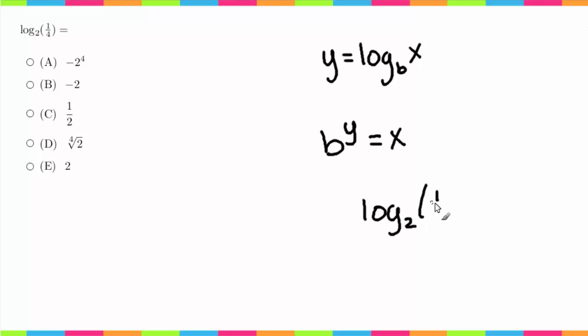So going back to this example, if we have log base 2 of one-fourth, and let's just say this equals x because that's what we're solving for, this becomes 2 to the x—remember this is always our base of the exponent—and these flip sides, so 2 to the x equals one-fourth.